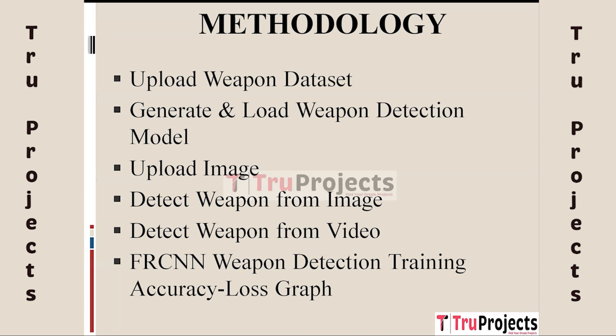The sixth module is the FRCNN Weapon Detection Training Accuracy and Loss Graph. This module displays the training progress of the FRCNN model. It shows a graph with epochs on the x-axis and accuracy and loss values on the y-axis. The accuracy line indicates how well the model is identifying weapons, while the loss line reflects the reduction in prediction error during training.